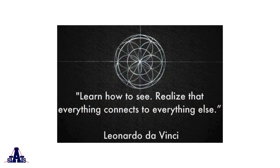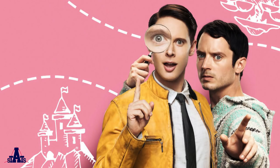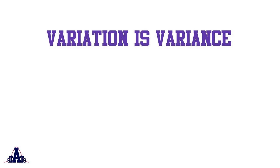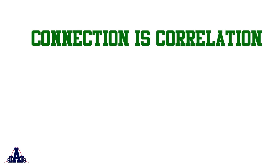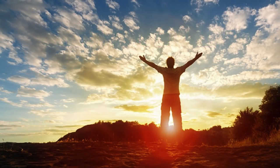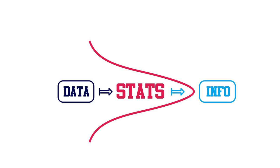Leonardo da Vinci said that, religion says that, and even Dirk Gently says that. Anyway, back to statistics. Variation is like variance — that's one of the things we study. Connection is like correlation, and that's something else we study. Correlation is quite important, especially when it comes to investments, because if you understand it you can own financial markets. So there we've answered the question: what is stats? It's taking data and getting some information.